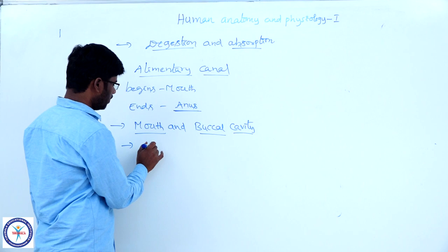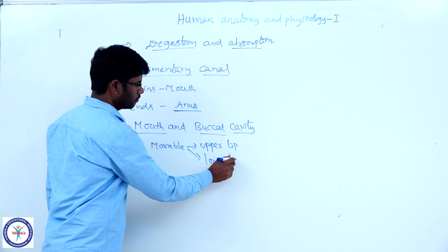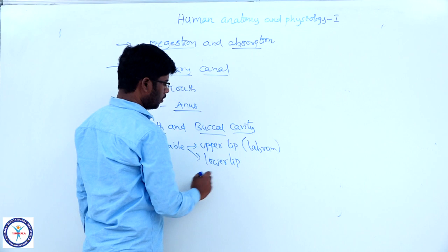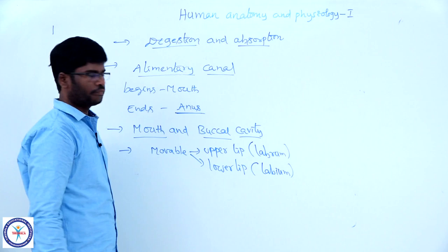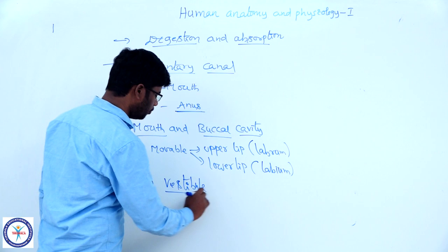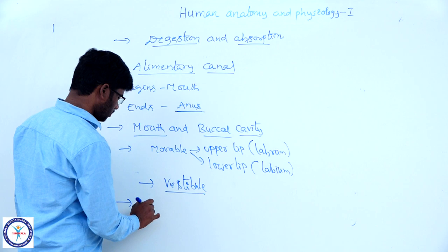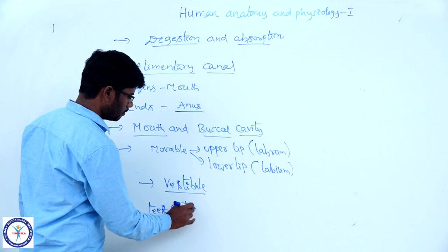Let us start with mouth and buccal cavity. The mouth is bordered by movable upper and lower lips. The upper lip is called the labrum and the lower lip is the labium. Between the lips and teeth there is a space called the vestibule. In the mouth there are various kinds of teeth and a tongue.